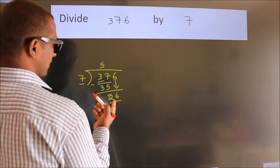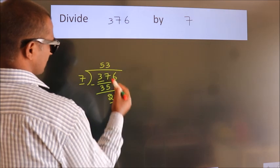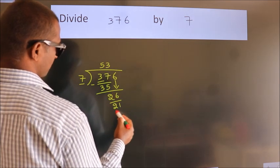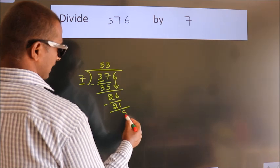A number close to 26 in the 7 table is 7 threes, 21. Now we subtract. We get 5.